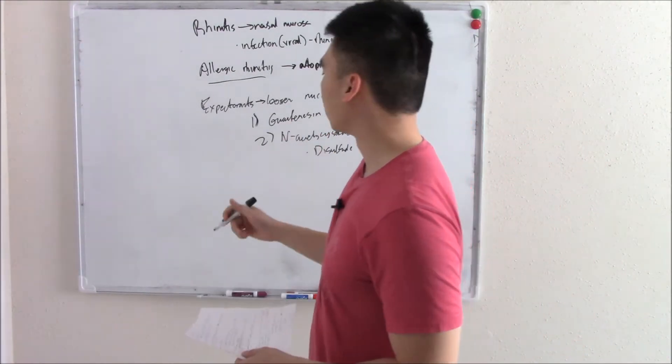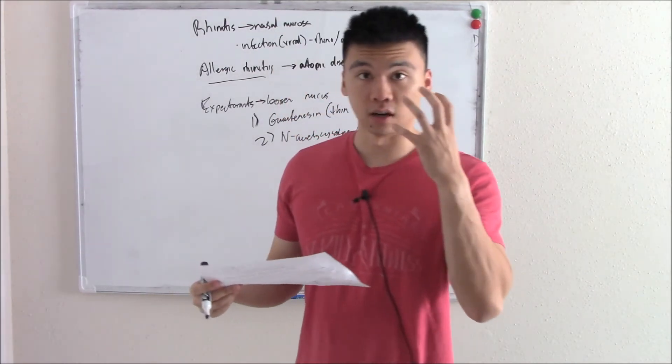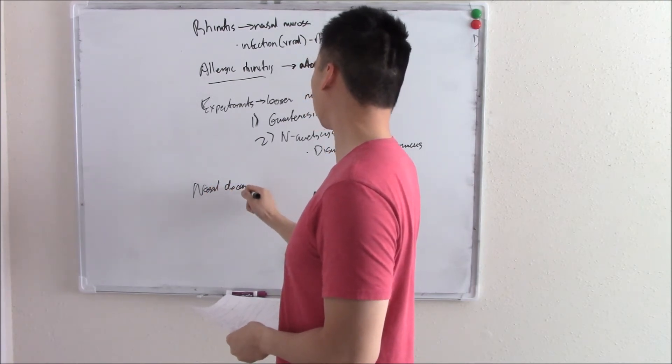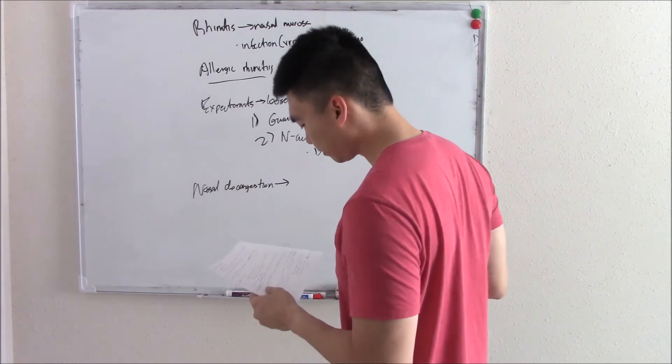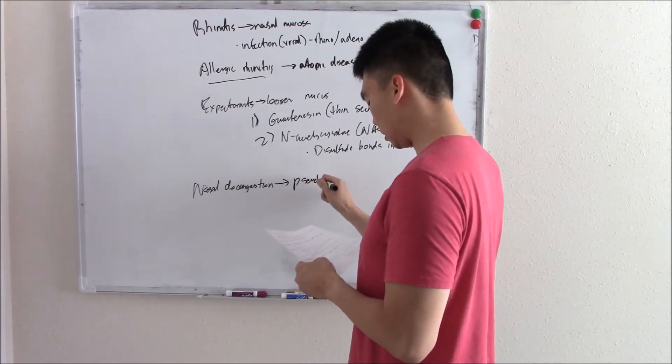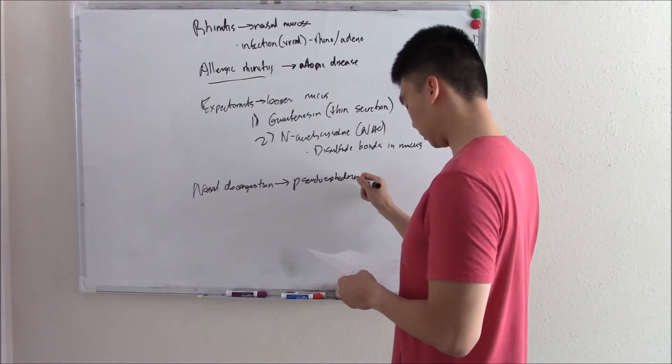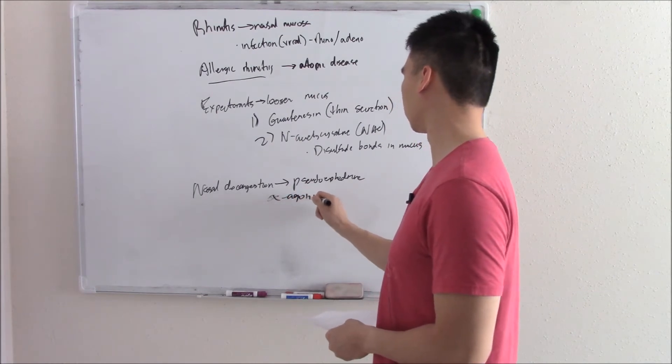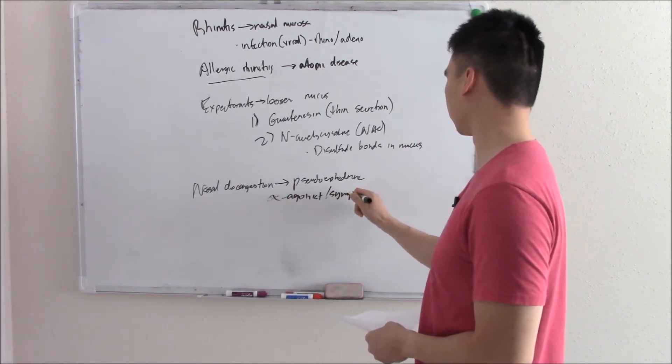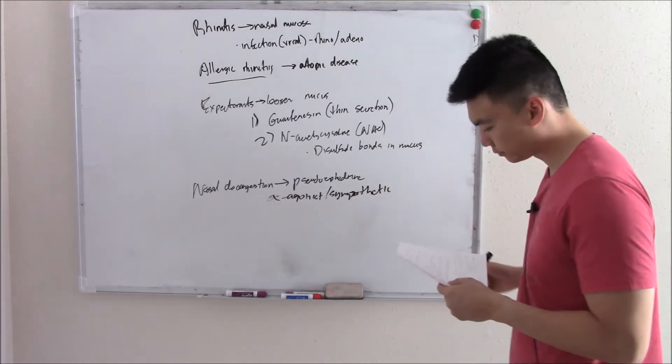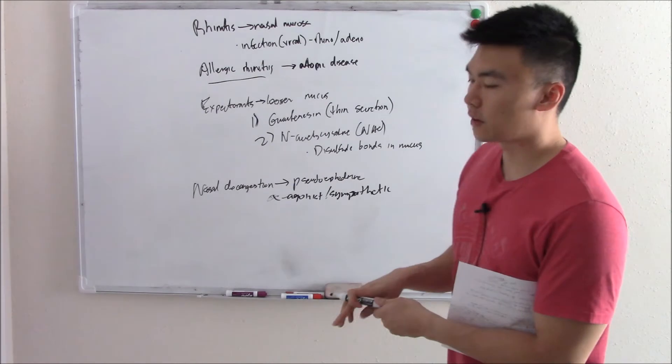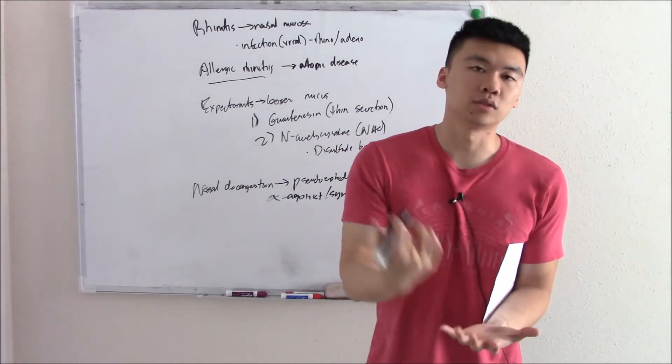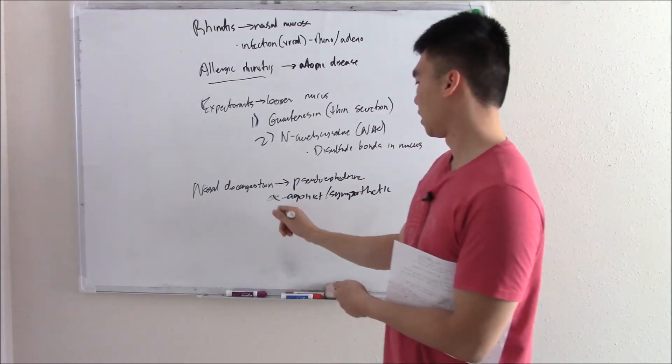So that's something you can do to reduce mucus. You can have another group of drugs to reduce the stuffy nose. Nasal decongestants. One of them is pseudoephedrine. Pseudoephedrine works on your sympathetic system as an alpha agonist. And by working as an alpha agonist, it can cause vasoconstriction. Vasoconstriction reduces blood flow, reduces that edema, reduces that congestion.